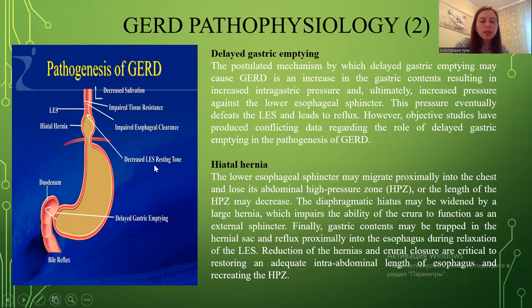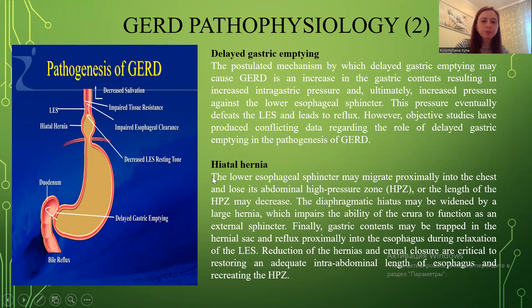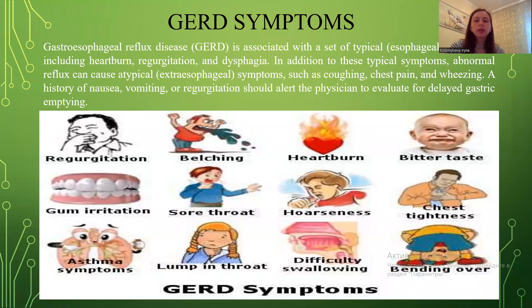You may see the pathogenesis of reflux disease in this picture, shown schematically. Moving to the next part of today's lecture — symptoms. Gastroesophageal reflux disease is associated with a set of typical esophageal symptoms, including heartburn, regurgitation, and dysphagia. In addition to these typical symptoms, abnormal reflux can cause atypical extra-esophageal symptoms such as coughing, chest pain, and wheezing.